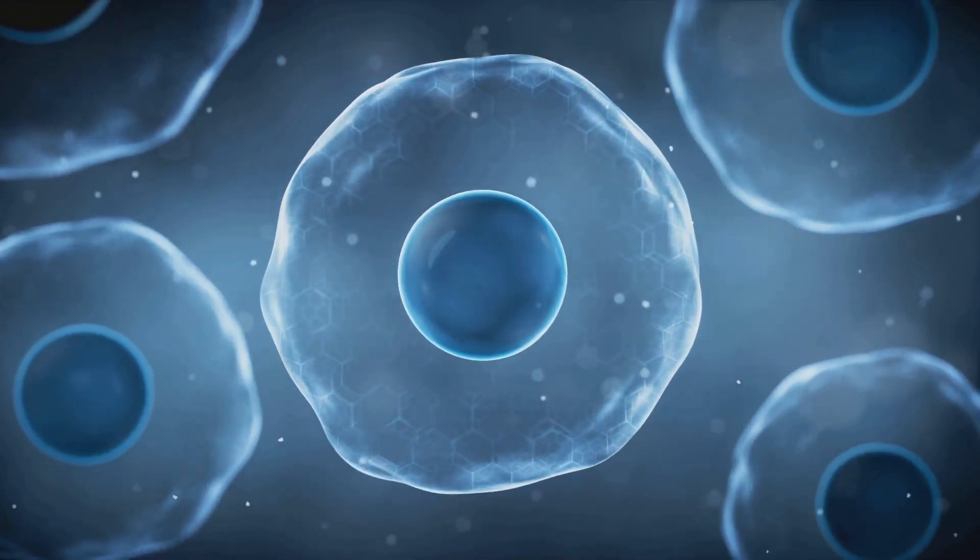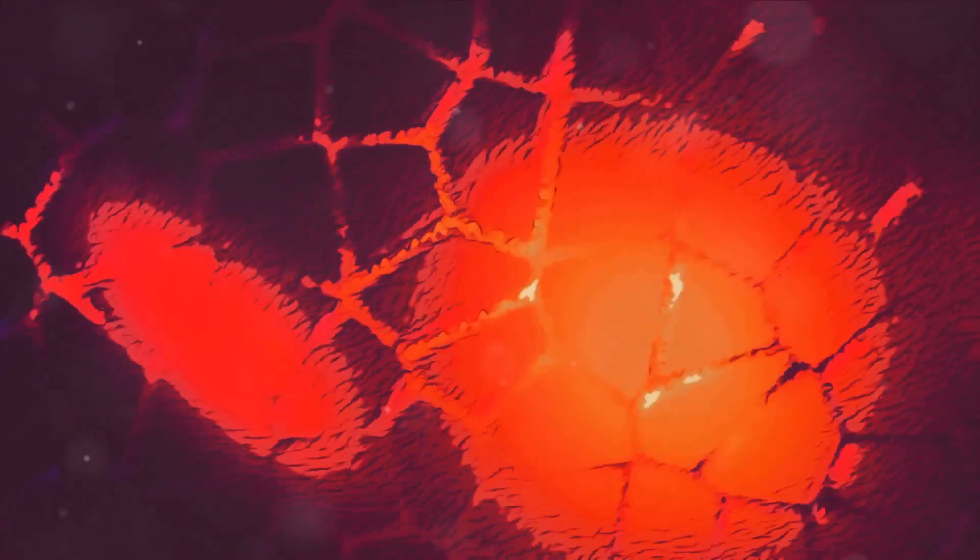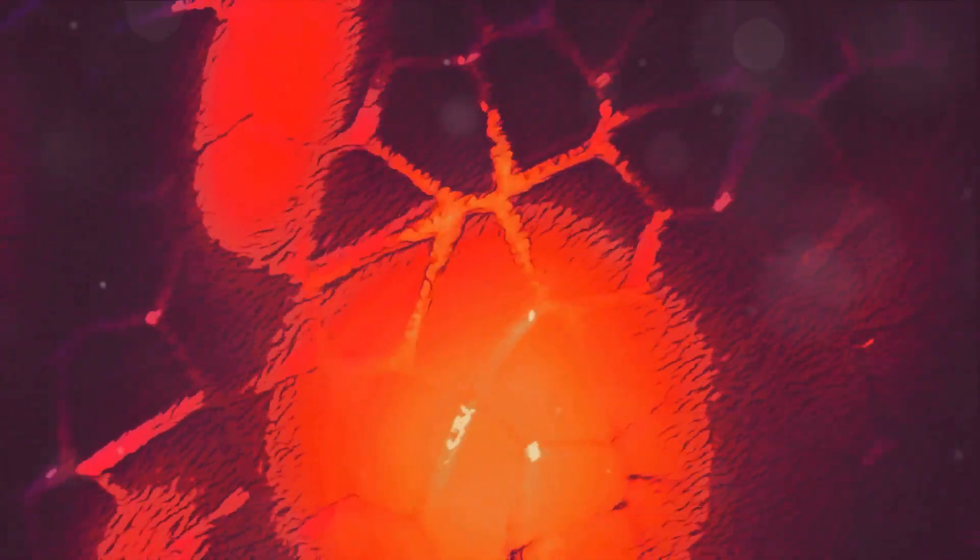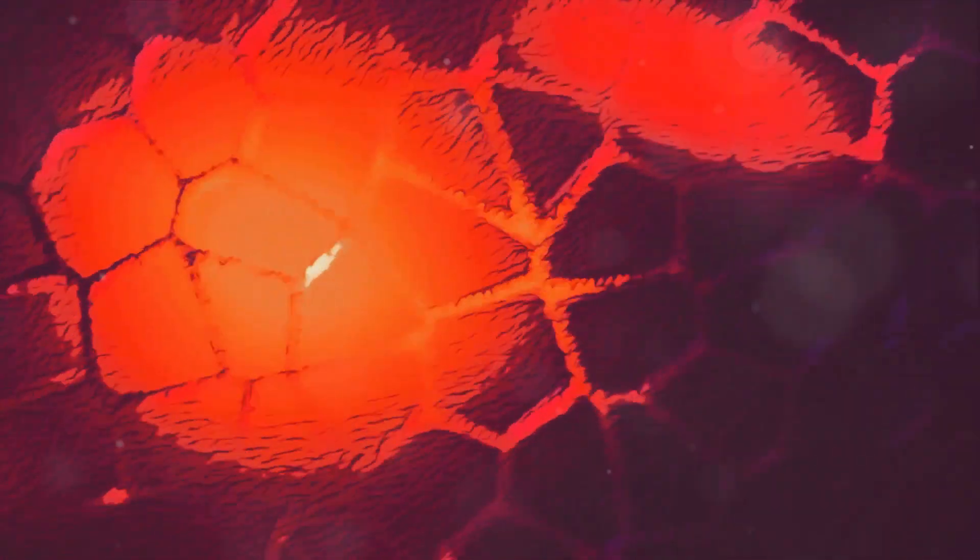When placed in water, they instinctively arrange themselves into a double layer or bilayer, with their heads facing the water and their tails hidden away. This self-assembly is what forms the basis of cell membranes, providing a barrier that separates the inside of the cell from the outside world.